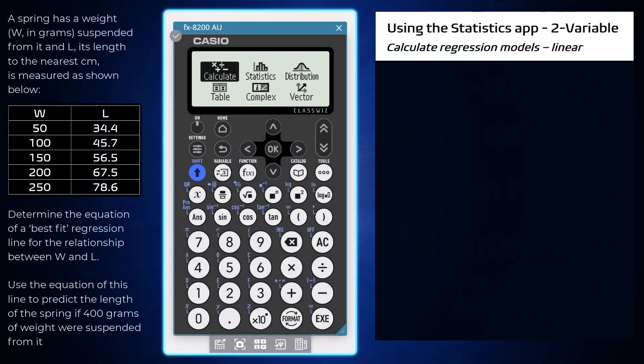The statistics app of a Casio FX 8200 AU can be used to calculate and work with a range of regression models for bivariate data. It can be used to fit a least squares regression line to a data set like this one which shows the measured length of a spring when an increasing number of 50 gram weights are suspended from it.